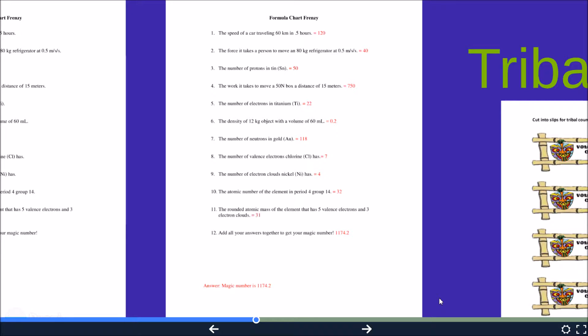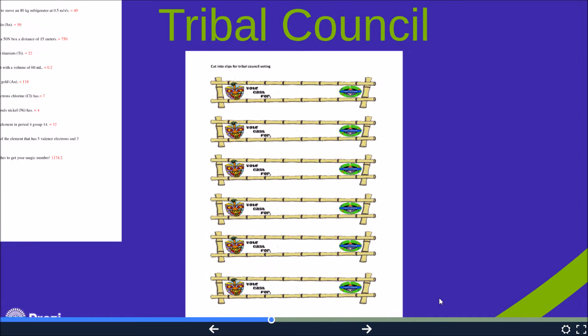Immediately after the immunity challenge, the class participates in what's called tribal council. These are our voting slips. They would be cut into slips of paper and each group gets one slip. Their job now is to write down the name of a team other than theirs that they would like to vote 20 points off from during the game. The kicker is they cannot vote for the team that won the immunity challenge. Therefore, the purpose of the immunity challenge.